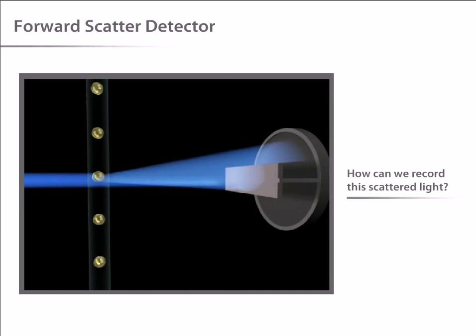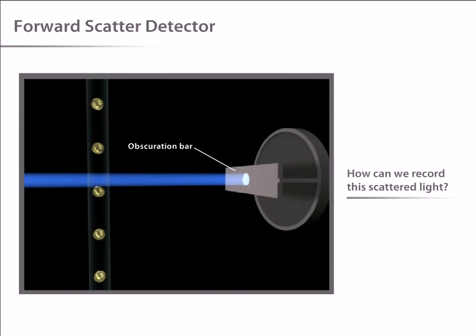Light is quantified by a detector that converts its intensity into voltage. In most cytometers, a blocking bar, called an obscuration bar, is placed in front of the forward scatter detector.